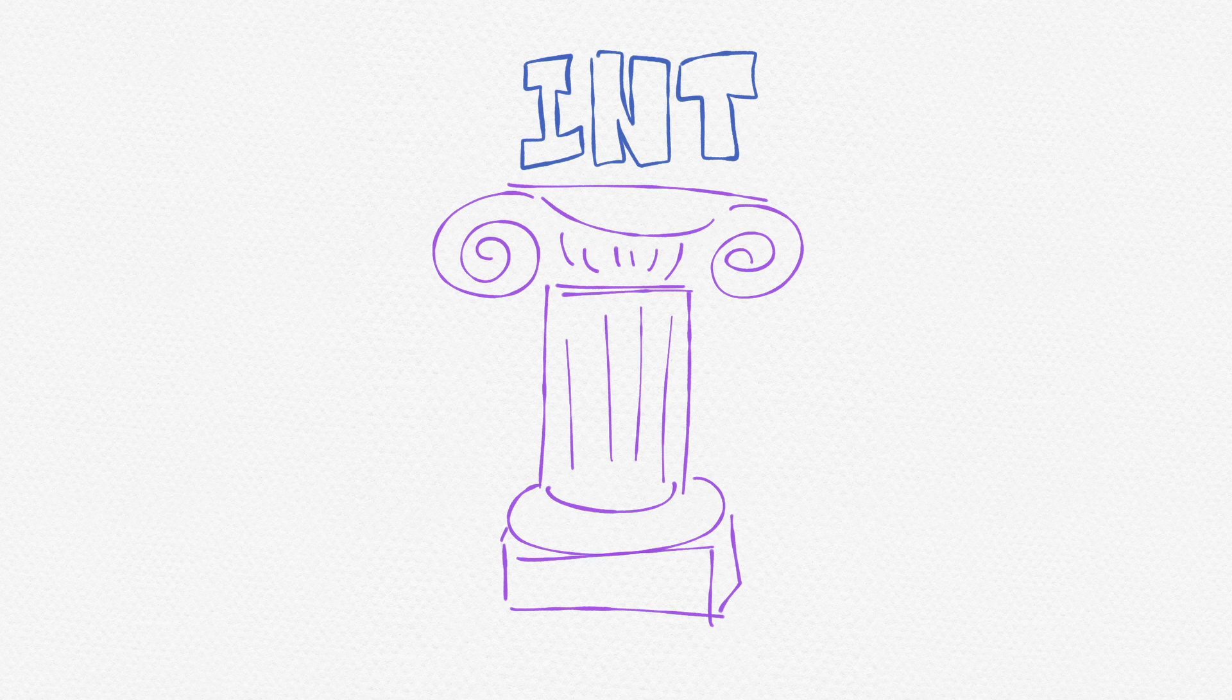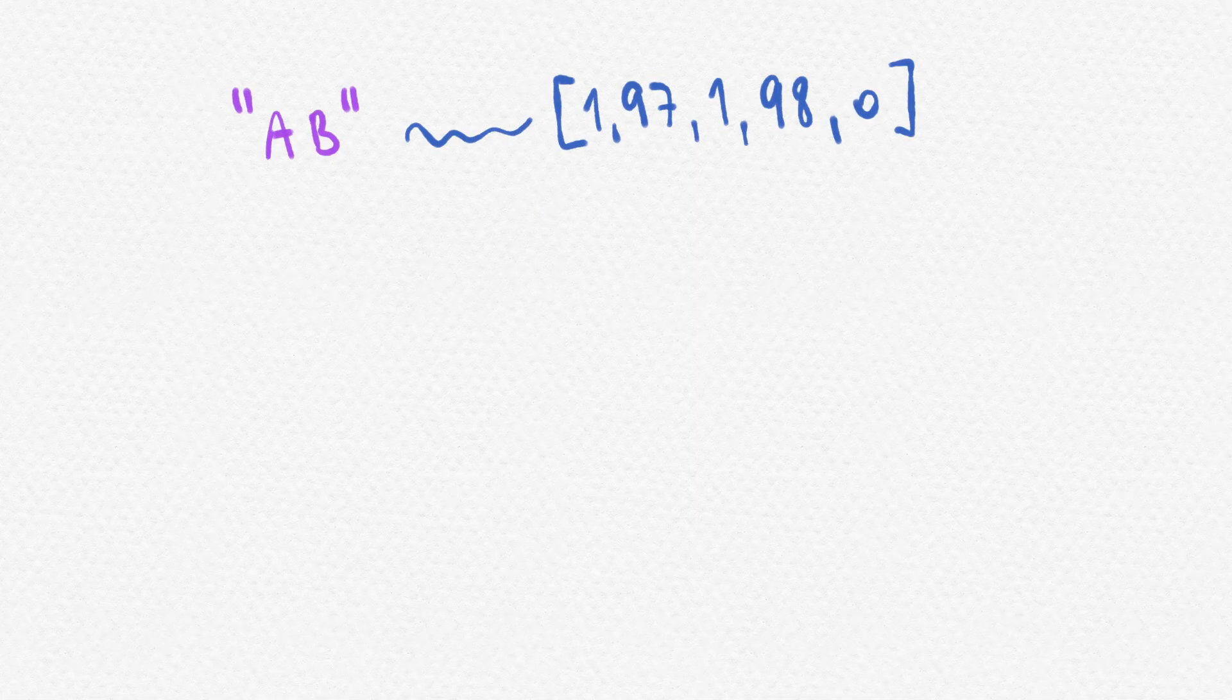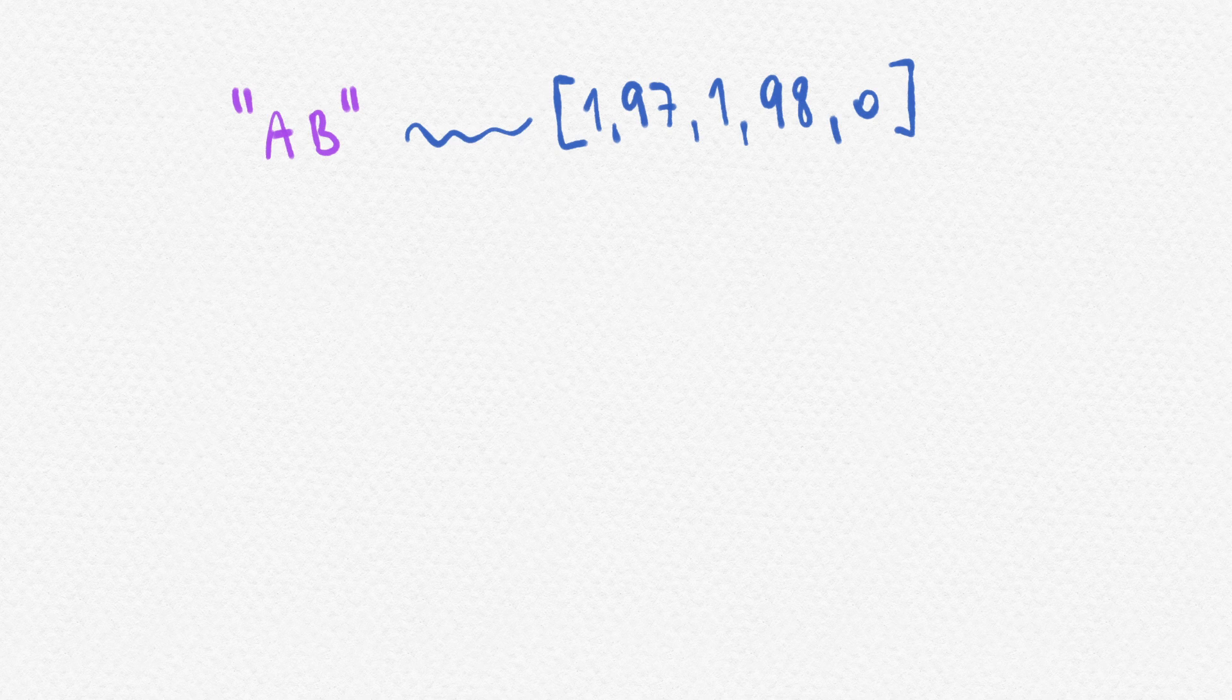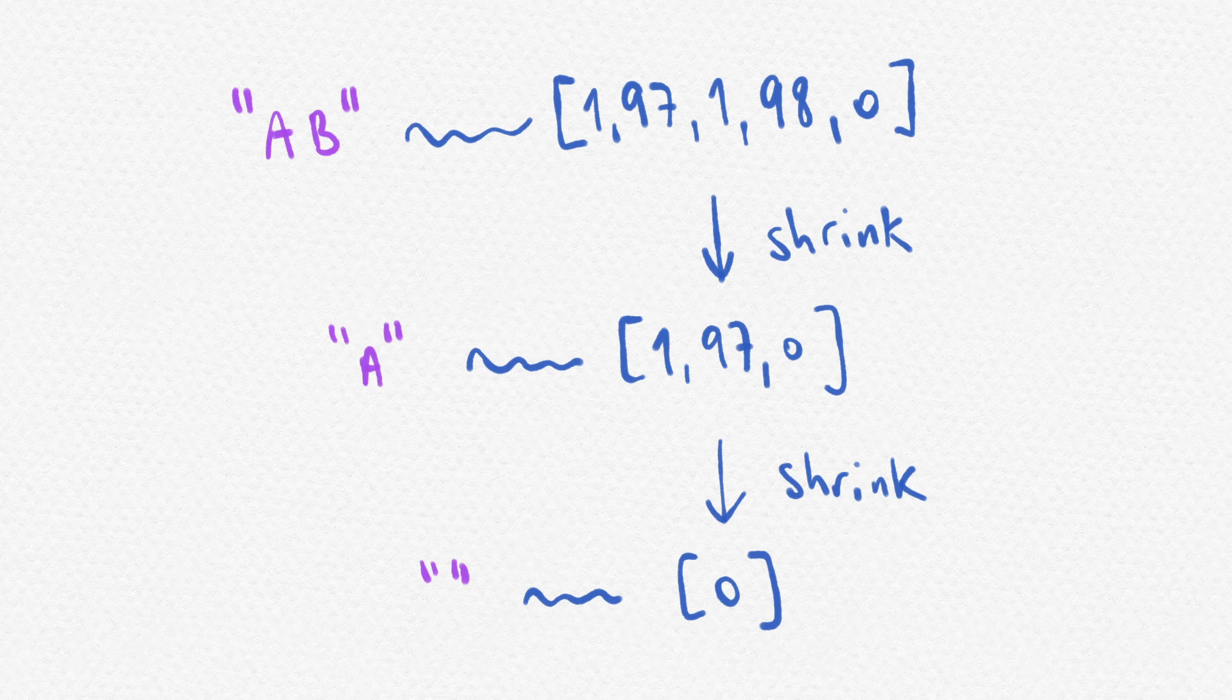The test runner remembers all the random integers drawn from the PRNG when generating your input value. And if your test fails, the runner then shrinks that history of drawn values. Not your generated value, but that list of integers that the PRNG gave.